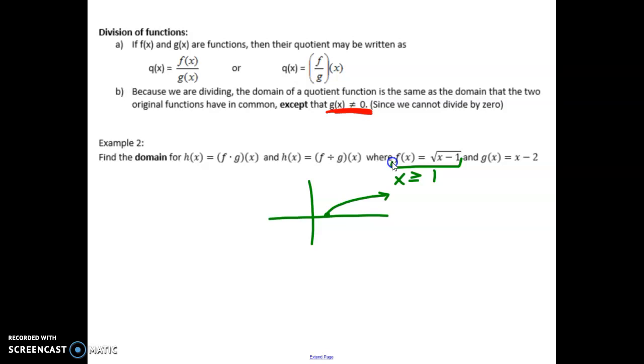How about this other graph, g of x? What kind of function is that? Linear. So it's going to look something like that. So that's an element of the reals. Good. Now let's come up with h, which is f times g. So f times g. What would be my domain, or what's the domain that would overlap between these two? So the domain for f times g is just going to be the domain in common, which is x is greater than or equal to 1.